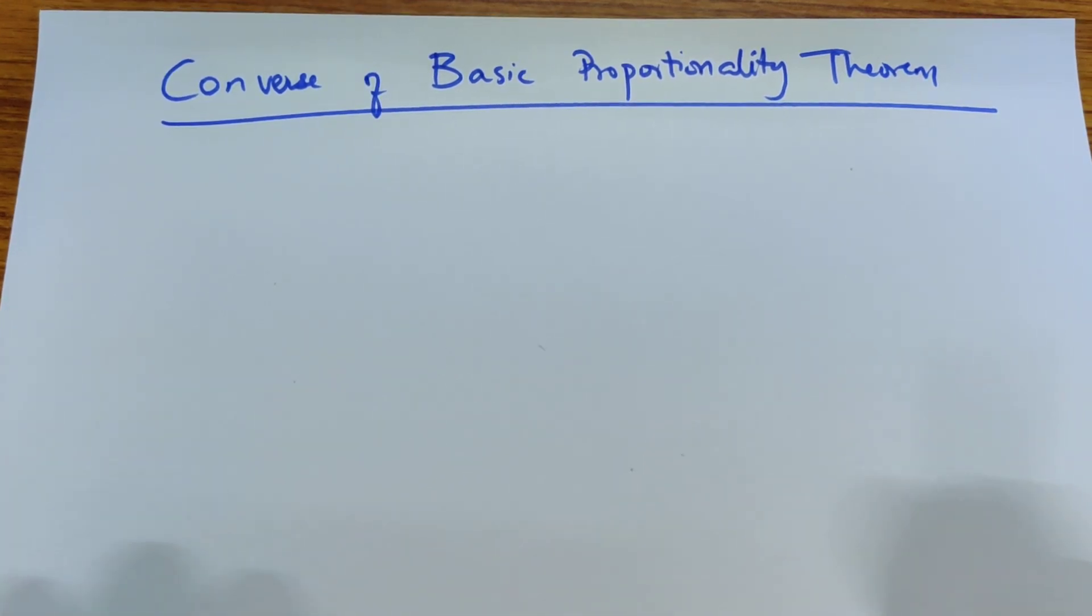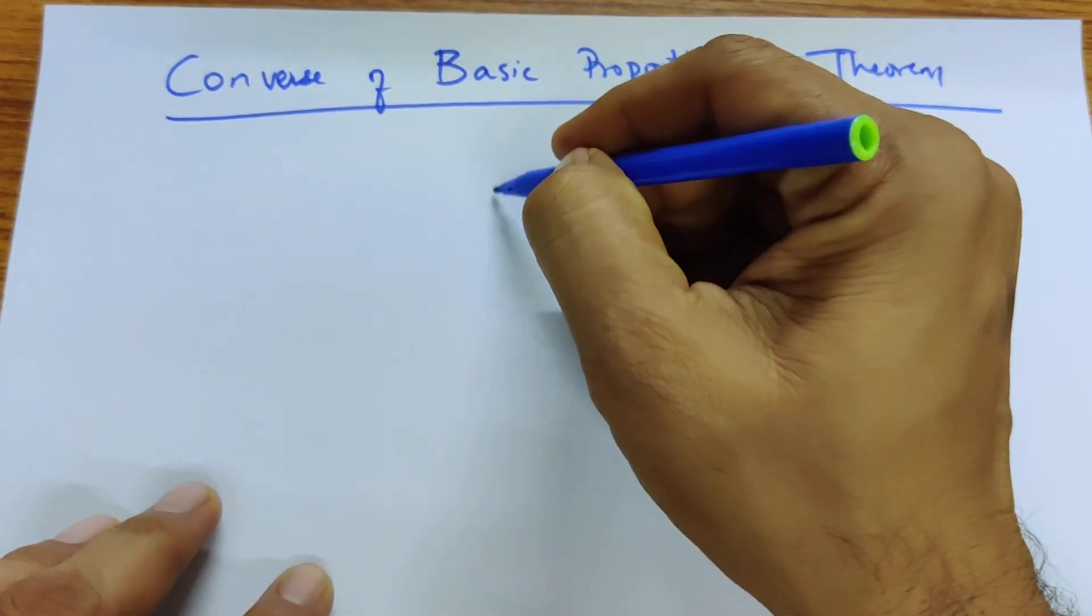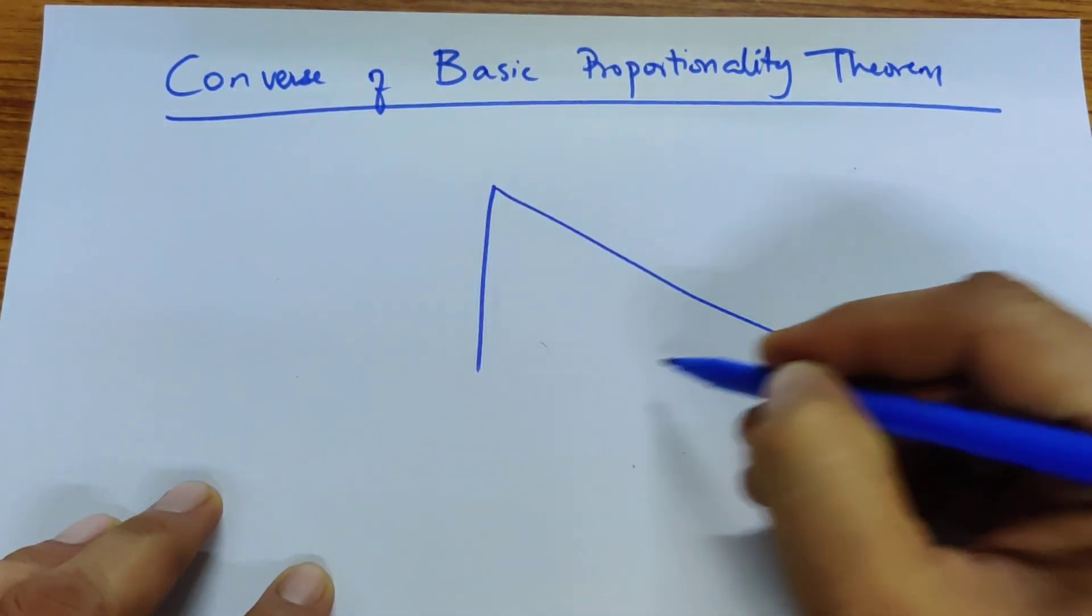This is a short video on the converse of the basic proportionality theorem. If you have, let's say, a triangle,